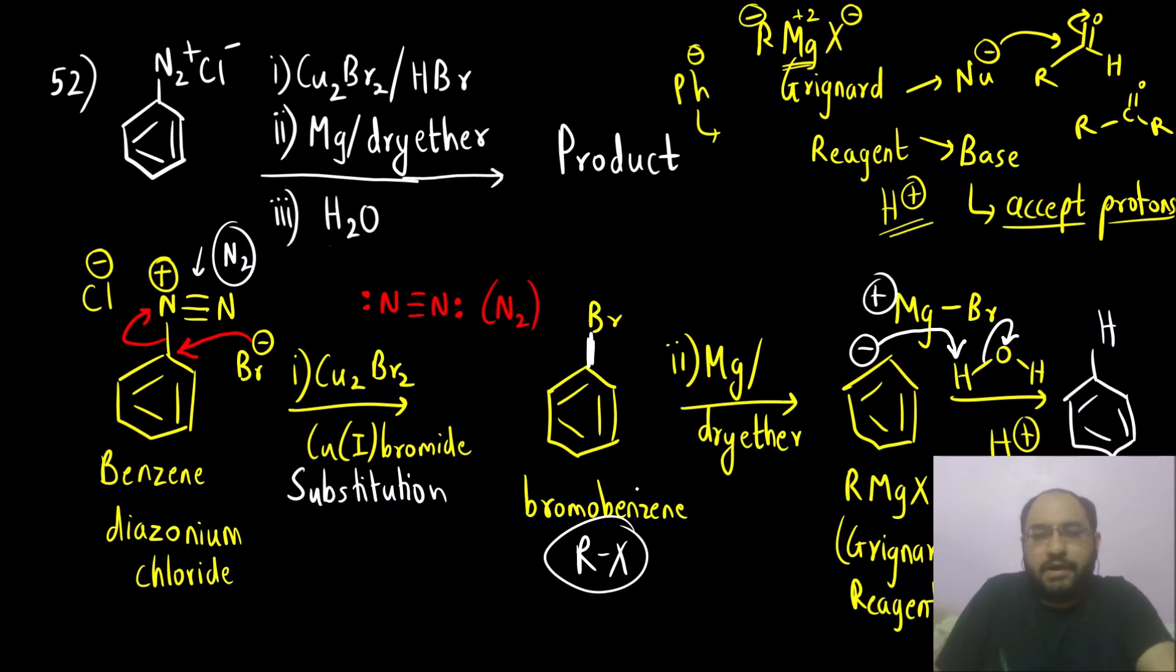Alkyl halide is what? It is going to react with magnesium in presence of dry ether as a solvent to form Grignard reagent RMgX and then we saw Grignard reagent, it has two roles.